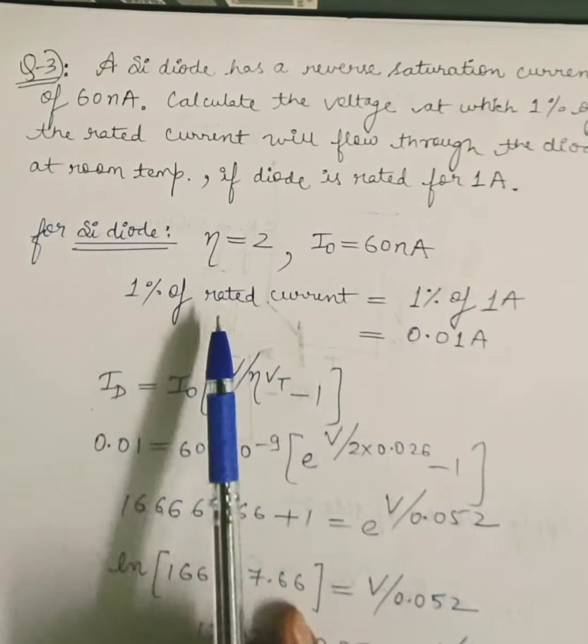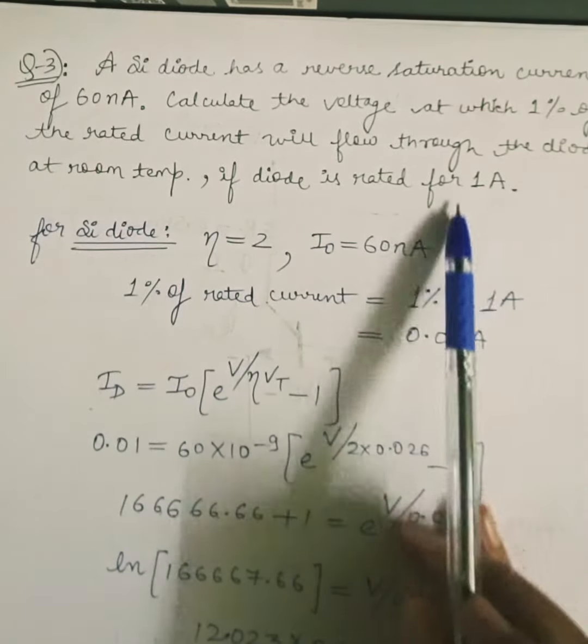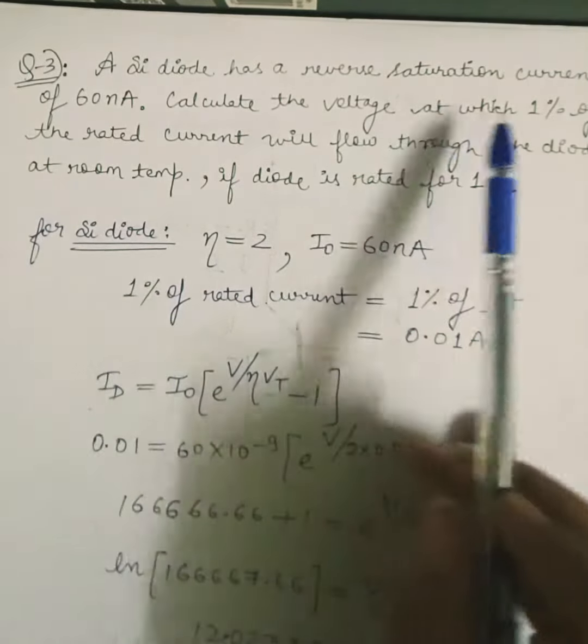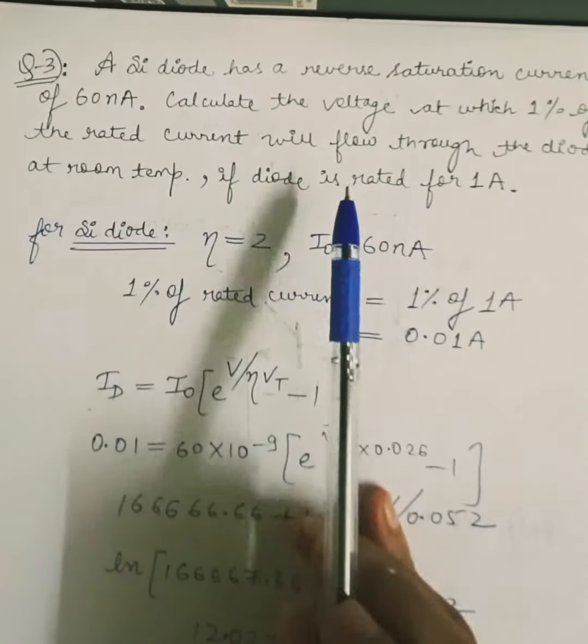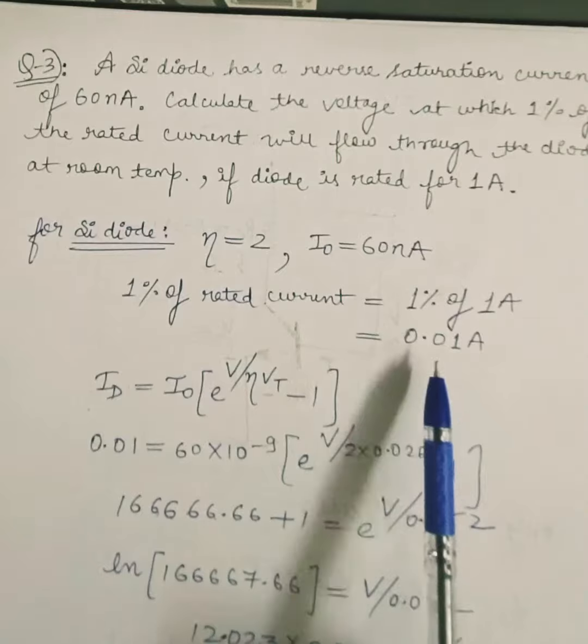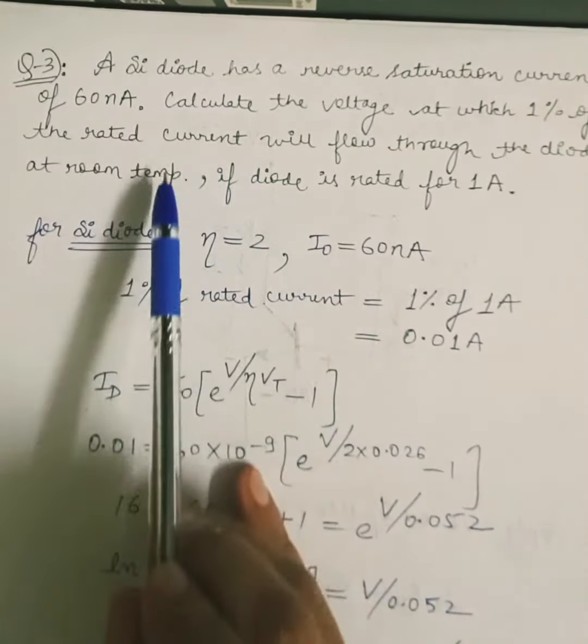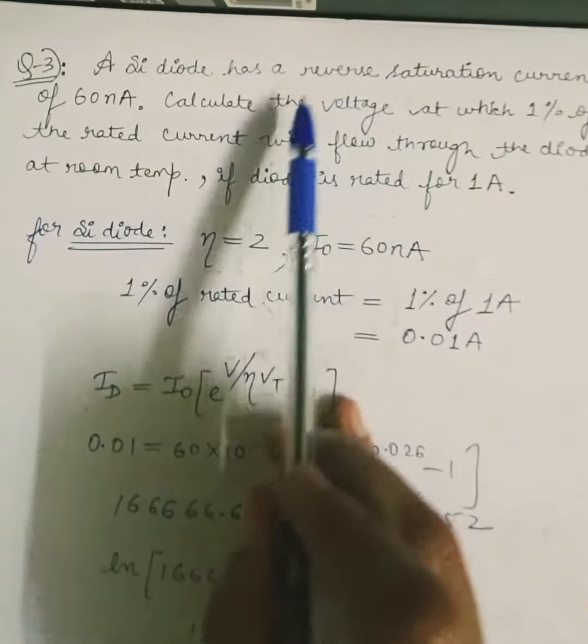1% of the rated current. So here the diode rating is already given and it is 1 ampere. If 1% of the rated current will flow through the diode we have to calculate the 1% of 1 ampere and it will be given by 0.01 ampere.